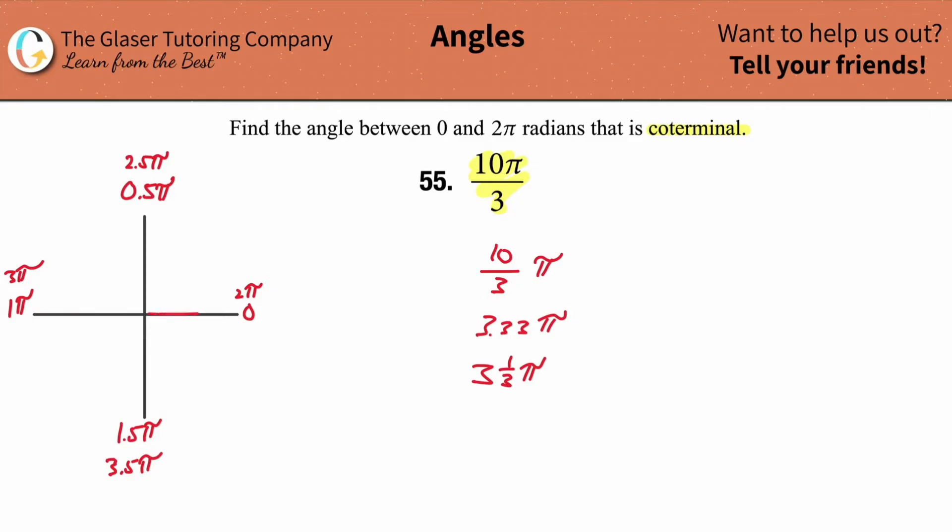Watch. Ready? Start on the initial side. Then take this terminal end here and now rotate it 3 and 1/3 π. Half π, full π, 1 and 1/2 π, 2π, 2 and 1/2 π, 3π, 3 and maybe 1/3 π - I went a little too far. Right? 3 and 1/3 π.